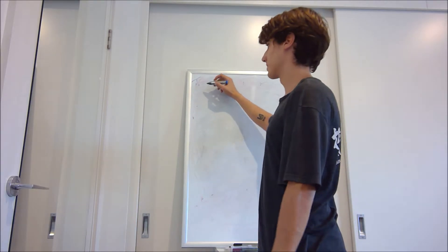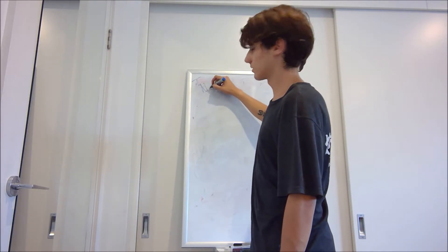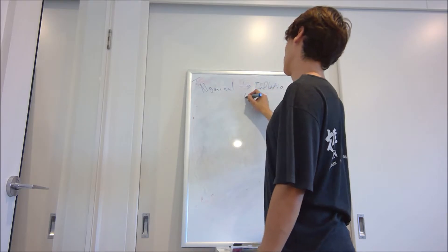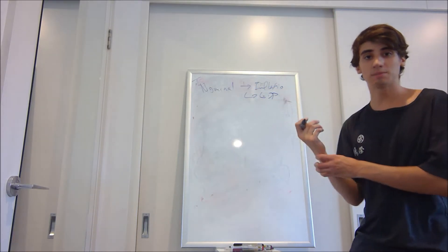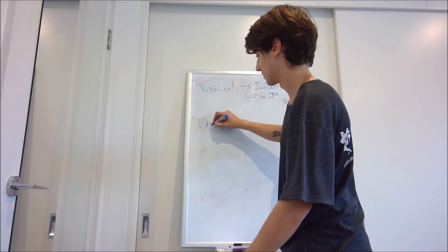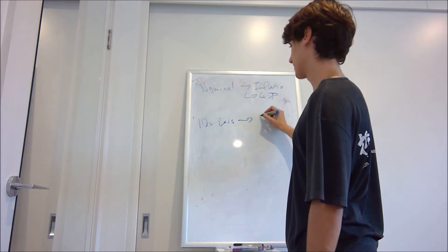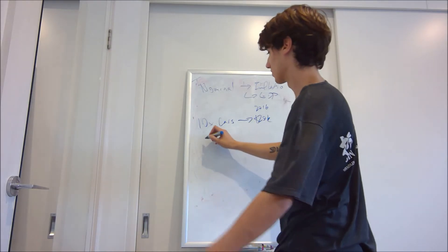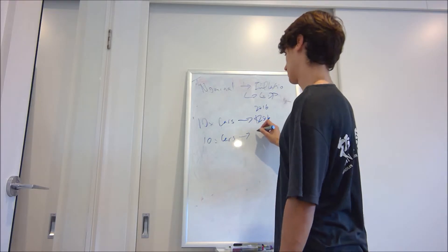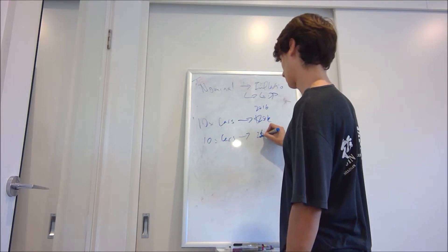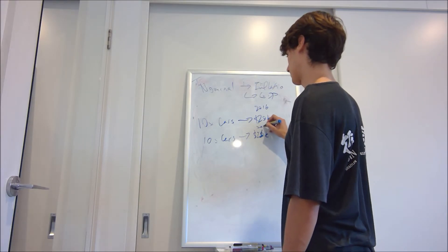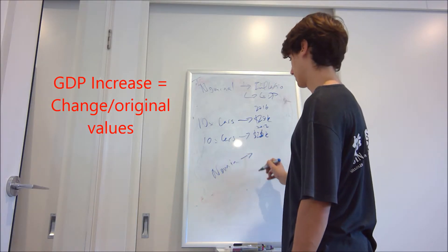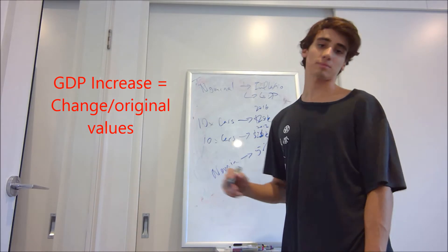Nominal versus real GDP. The nominal GDP is affected by inflation to produce your real GDP. Simply put, if you sell 10 cars worth $20,000 each in 2016, and then the next year you sell 10 cars worth $21,000 each in 2017, your nominal GDP will increase by 5%.